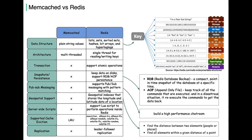Unlike Redis, Memcached has a simpler data model, supporting only key-value pairs. It doesn't offer the rich data structure support that Redis provides. Memcached doesn't provide native support for data persistence — it relies solely on keeping data in memory, which makes it less suitable for use cases where persistence is crucial. Memcached is known for its exceptional performance in scenarios where simple key-based caching is sufficient.